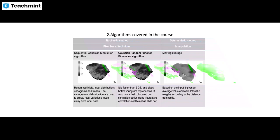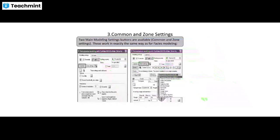Now we can see the two main common settings available — the common and zone settings buttons. These work exactly the same way as what you learned in the facies modeling. You can see the common and zone settings on the left side and right-hand side of the screen, as clearly shown.